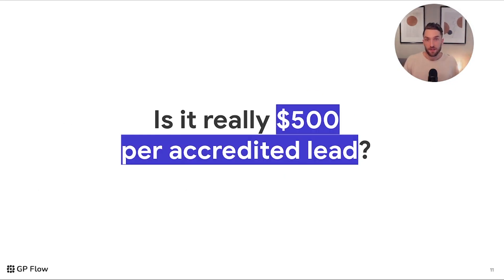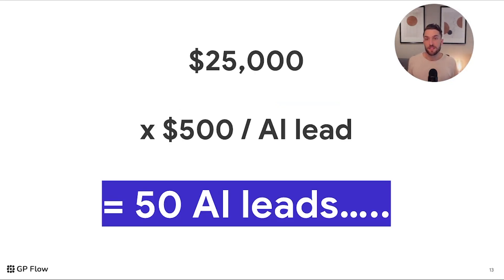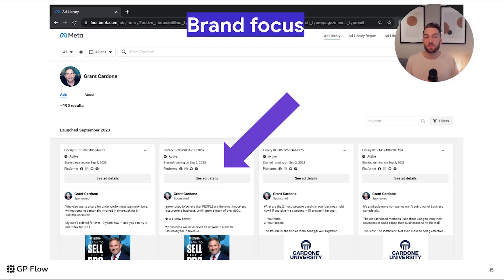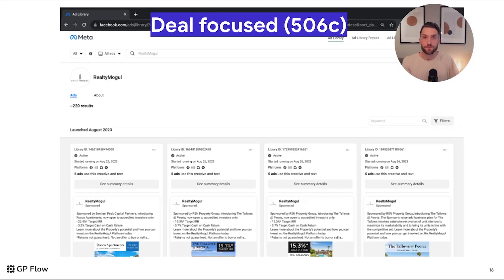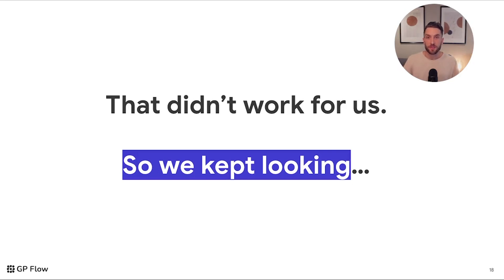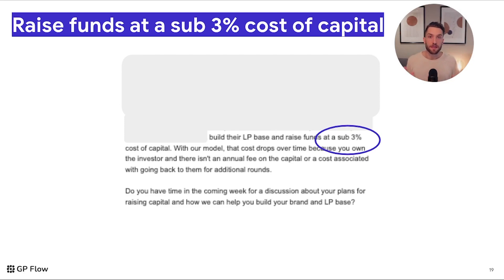Now putting money into a channel immediately, we were told to expect about $500 per accredited lead. With $25,000 to invest at $500 per accredited lead, that would be about 50 leads. We saw other companies investing heavily on Facebook — many focusing on their brand, not on specific deals. Speaking to experts, they told us to expect $300 to $600 per accredited lead to start, and to put down $100,000 minimum just to get going per month. That didn't really work for us, so we kept looking, spoke to a bunch of firms, and found one that helped us get live. Their pitch was: here's how you can raise funds at a sub-3% cost of capital, which hit our pain point.